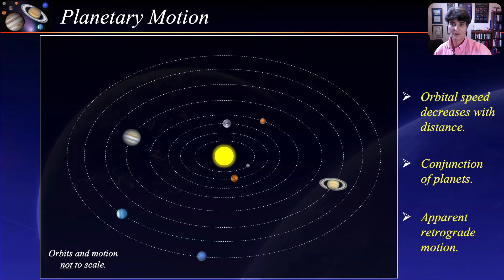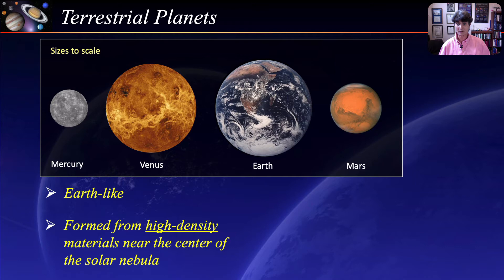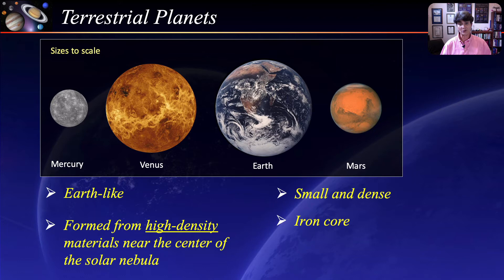Before we look at each individual planet, let's cover some general characteristics. Planets are generally divided into two groups. The terrestrial planets are called terrestrial because they are Earth-like in many characteristics. They are formed from the high-density material near the center of the solar nebula, closest to the sun. They are relatively small and very dense, all have an inner iron core, and are sometimes referred to as the inner planets.